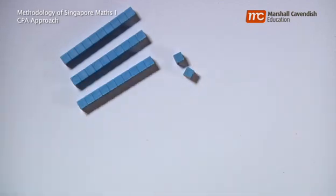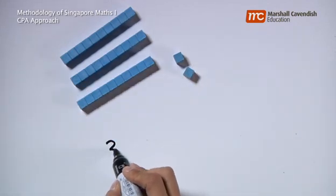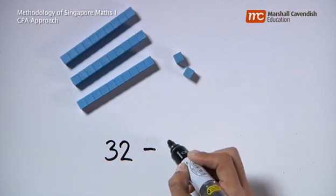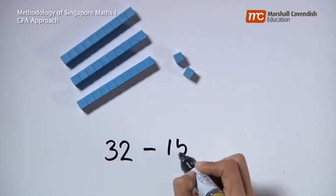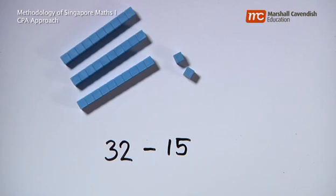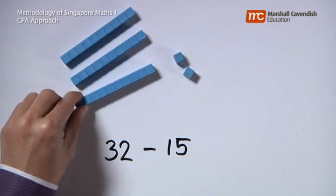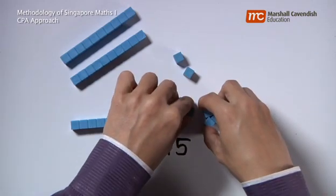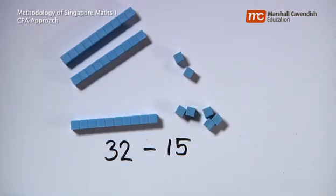What if it is slightly more difficult? 32 subtract 15. Students will now say that, alright, to take away 5 from the 2, that's not possible right now because there are only 2 ones. They will then say, oh, perhaps I could exchange 1 of the tens for 10 ones.